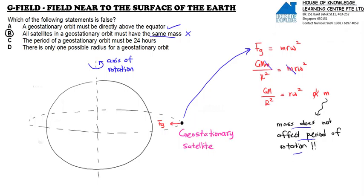Let's continue. Period of geostationary satellite must be 24 hours. Correct. One radius only. Correct.